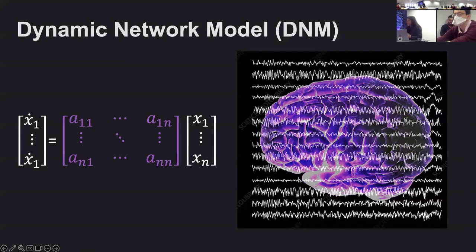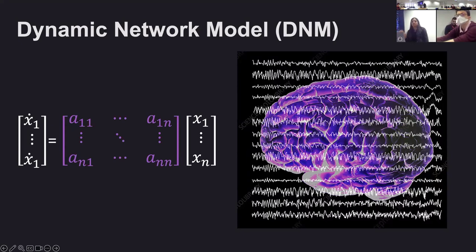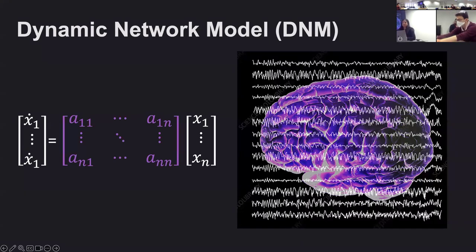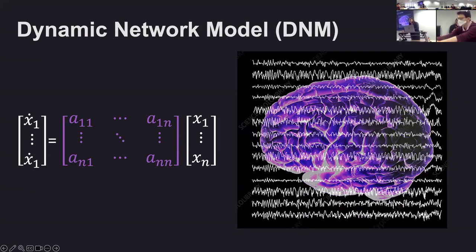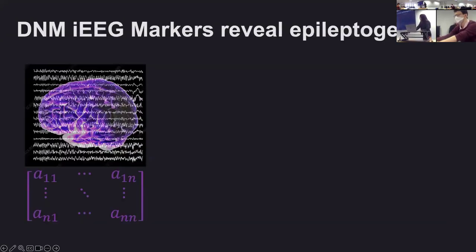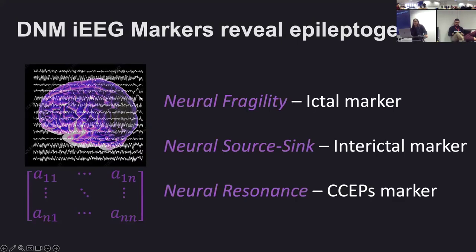We're going to call this a dynamic network model — dynamic because it's X-dot equals AX, predicting future activity from present activity. This A matrix differs from functional connectivity: a correlation or connectivity matrix cannot generate data, whereas this model, given A, can actually simulate EEG. The claim is that this simple model can reveal properties of epileptogenicity. Today I'll talk about three different markers gleaned from this model. One is neural fragility — looking at snapshots of seizures to say where they start. A second marker, source sync, uses a few minutes of interictal resting-state data when the brain is not seizing. Third, if we have time, resonance — using stimulation responses.